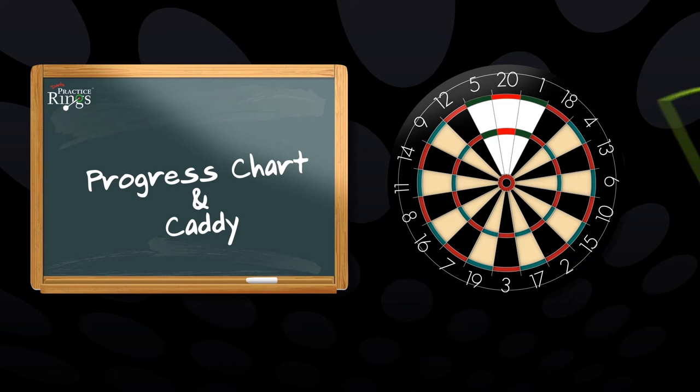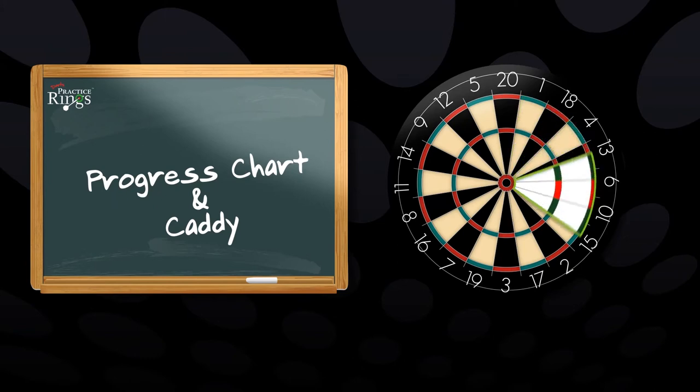The progress chart is held in place by the progress chart caddy. A player will choose an area of the dartboard where they feel they require the most improvement.